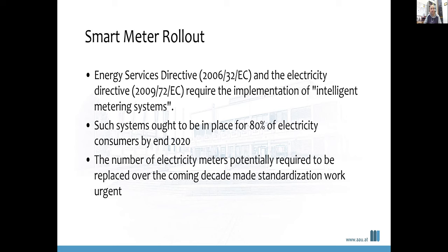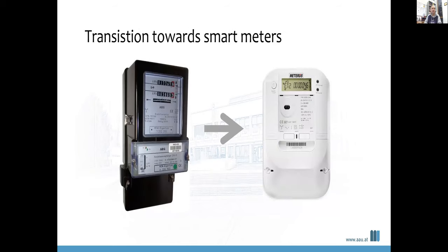This was more or less met, though implementation was a bit slow at first. Many of us now have a smart meter at home. One aim was to replace old electricity meters and come up with standardization. There was also the idea that transitioning from the old standard Ferraris counters to smart meters would open up possibilities for informing customers about energy consumption, which might have an effect on reducing it.